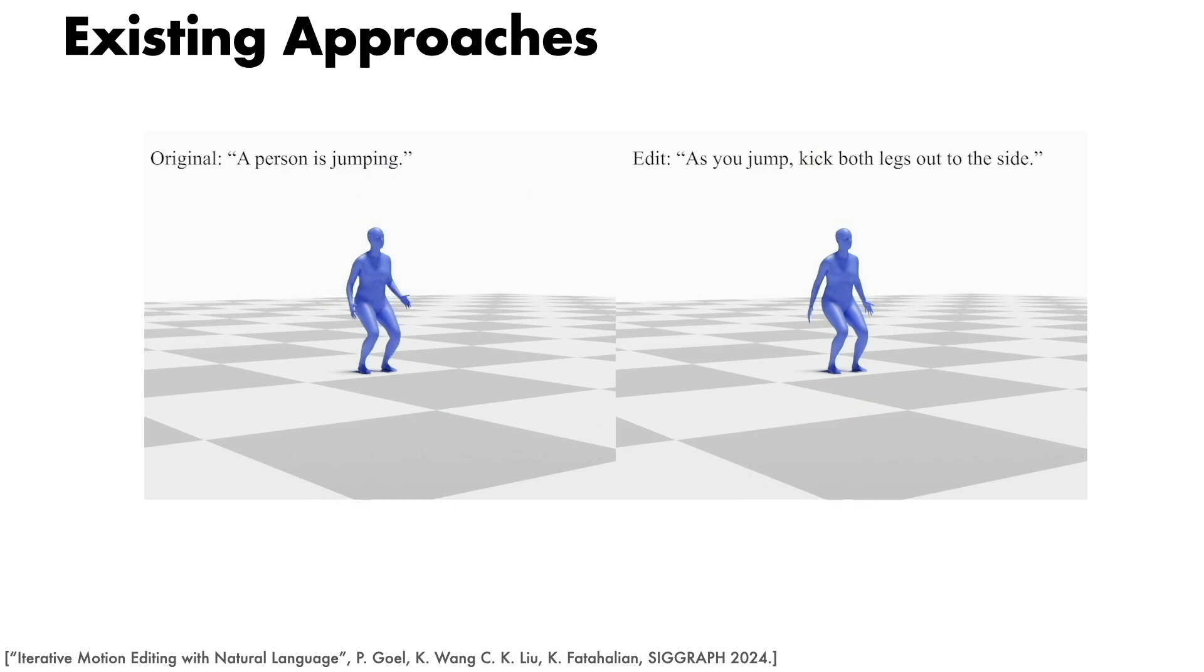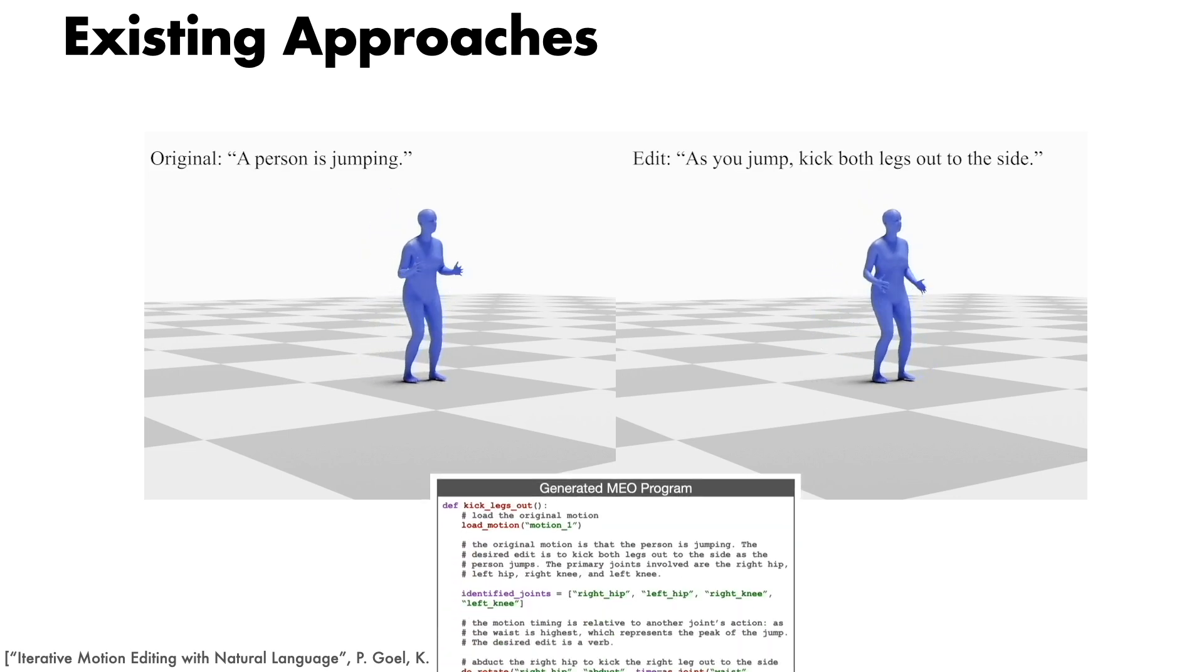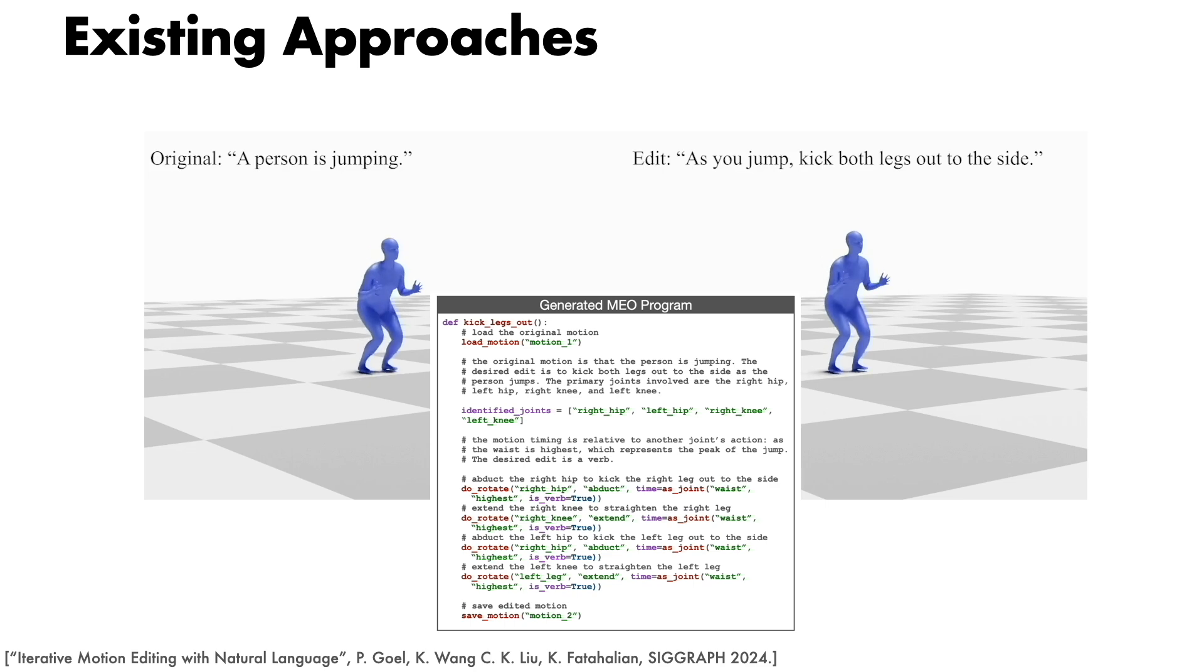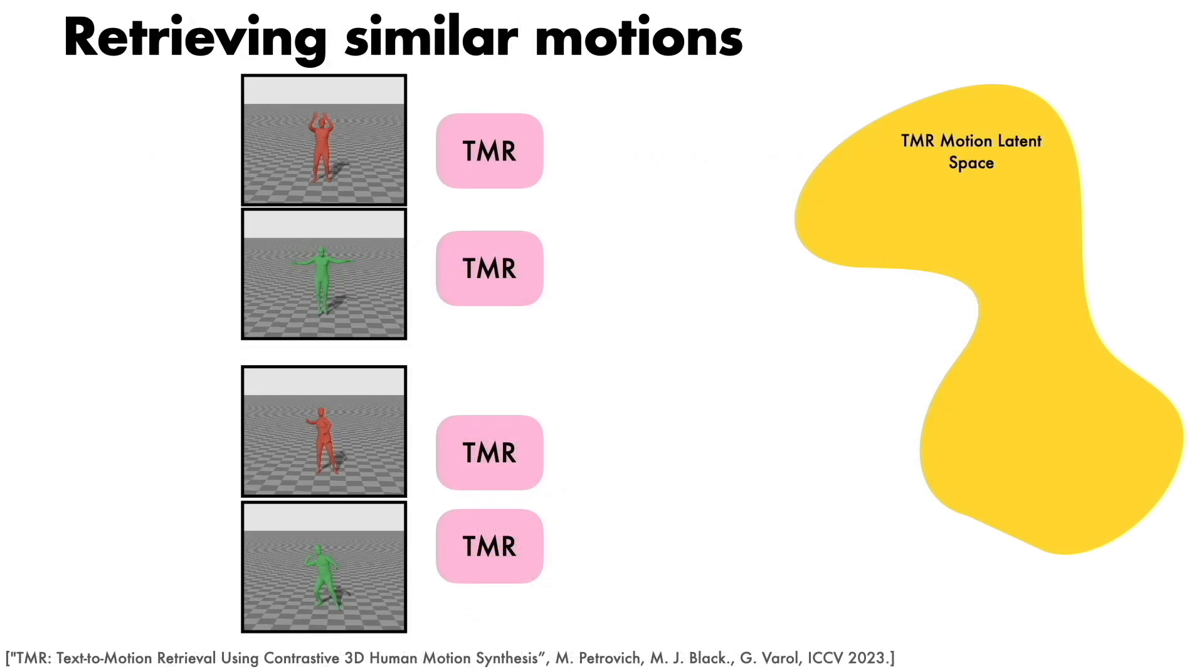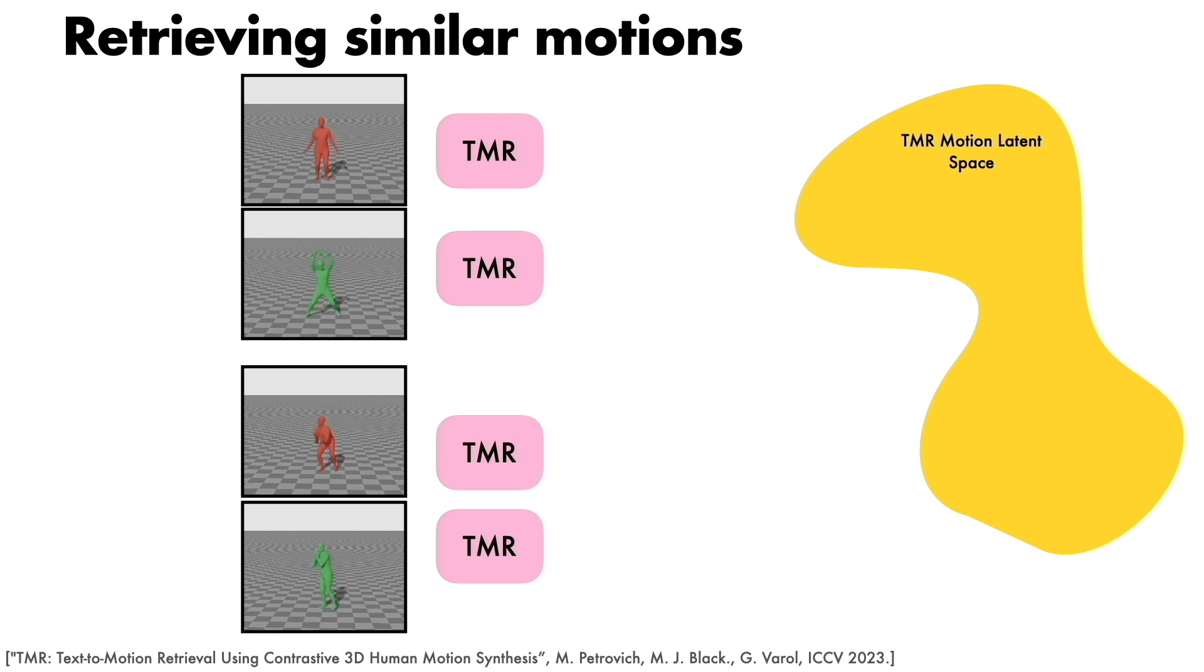Closer to our work, a recent method uses the caption of a source motion to generate an edited animation. However, their method relies on the caption of the input motion and the accuracy of GPT to describe the edit adjustments to overcome the absence of ground truth triplets with motions and edit text.